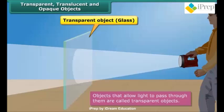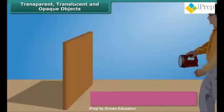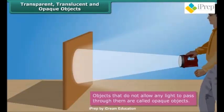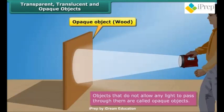Glass, clean air, pure water, etc. are examples of transparent objects. Objects that do not allow any light to pass through them are called opaque objects. As a result, we cannot see through them.